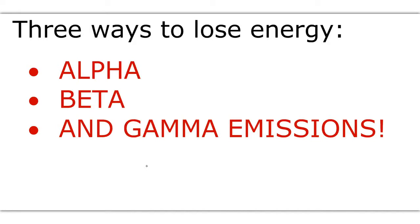There are three ways to lose energy in order to become more stable for radioactivity. The first is alpha, and I do want you to know that the symbol for alpha is the Greek symbol alpha. Beta is the second type, and the symbol for beta is the Greek letter beta. And then gamma emissions are the third type, which has the Greek letter for gamma, which is kind of like a fish diving downward.